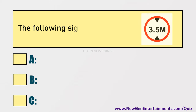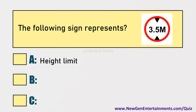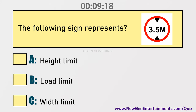The following sign represents: Options are: A) Height limit, B) Load limit, C) Width limit. Answer: Option A, Height limit.